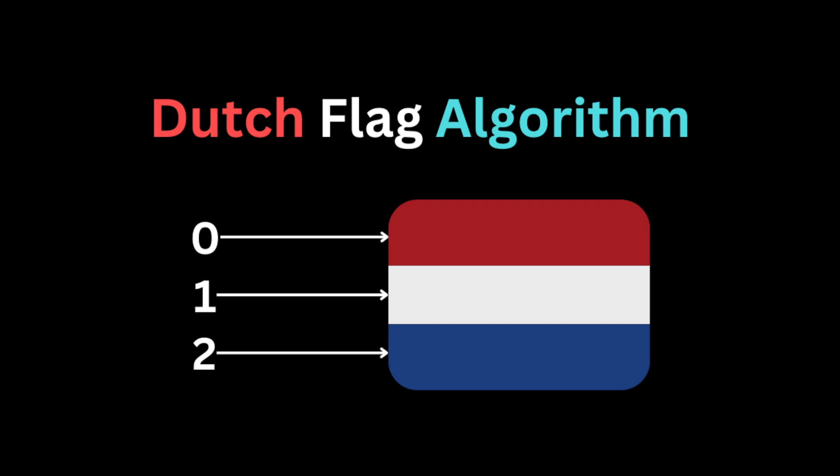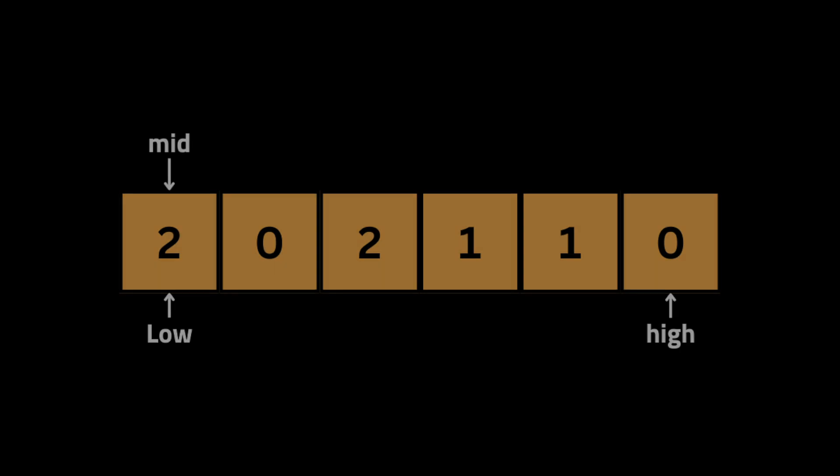The Dutch National Flag algorithm is a two-pointer based method that can divide an array into three sections, like the Netherlands flag which consists of three colors: red, white, and blue. The algorithm partitions the array based on a given pivot, but in this problem we don't know the pivot upfront. The difference here is that we're going to have multiple pivots: zero, one, and two.